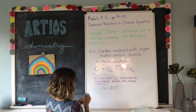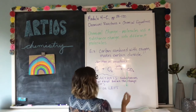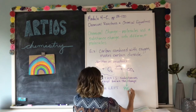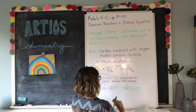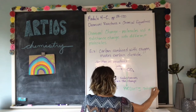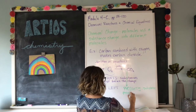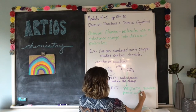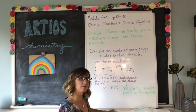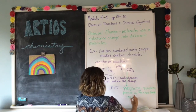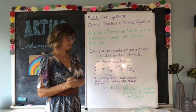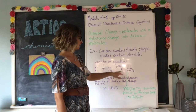On the other side of the equation are the products. In this case there's only one product: carbon dioxide. Products are the substances produced by the chemical change, and they are always written on the right. So: reactants yield products.